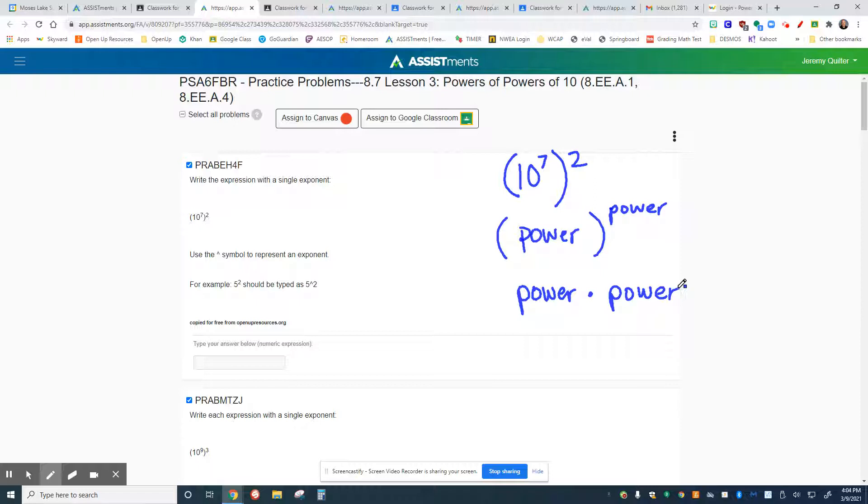And the way that we can think about this as well is we can think about this as saying that outside number. So this outside power right here, 2, can represent two groups of the inner power, 10 to the 7th power.